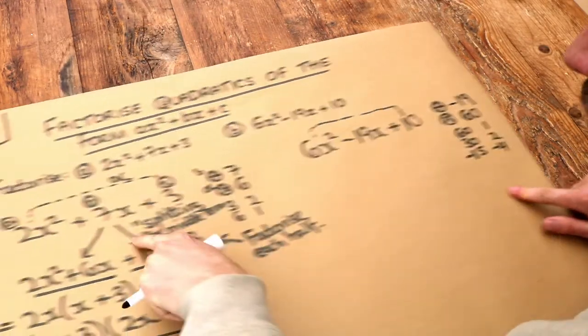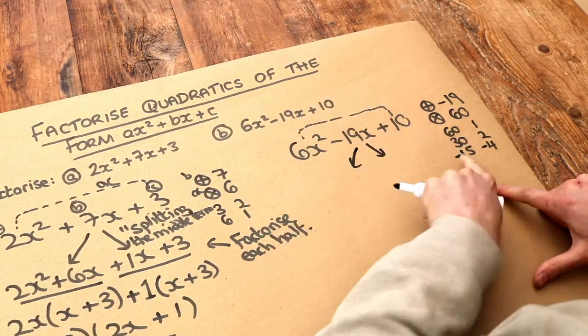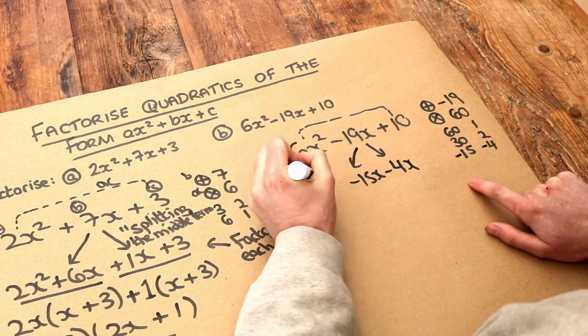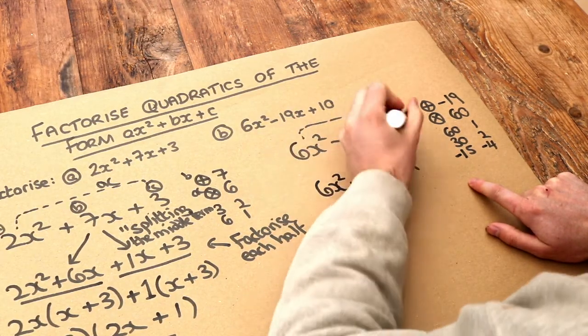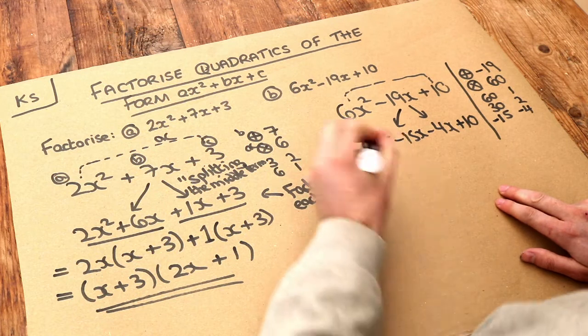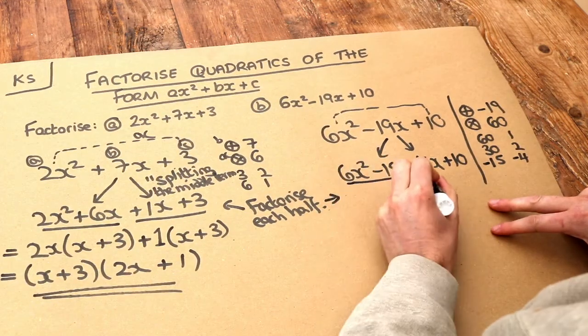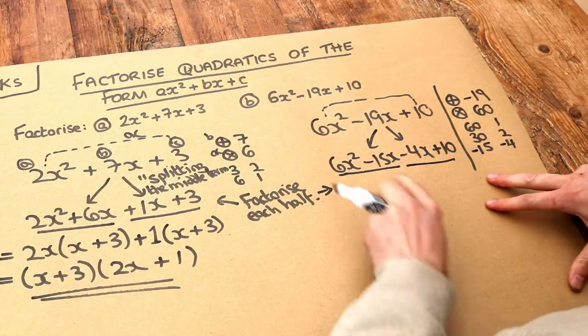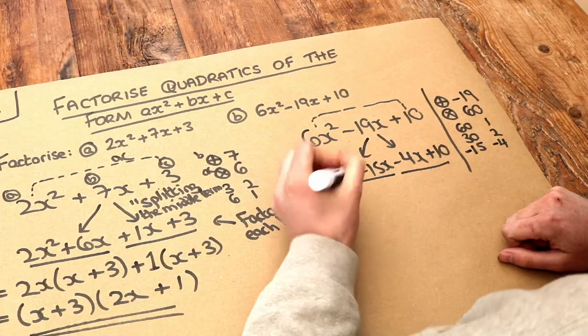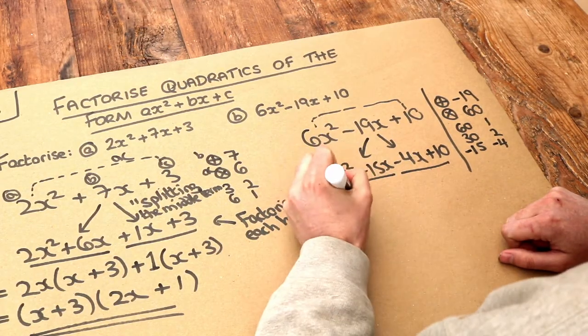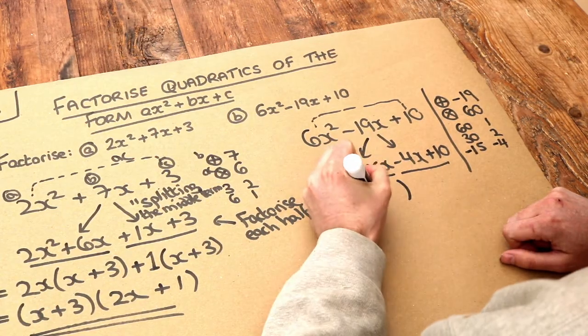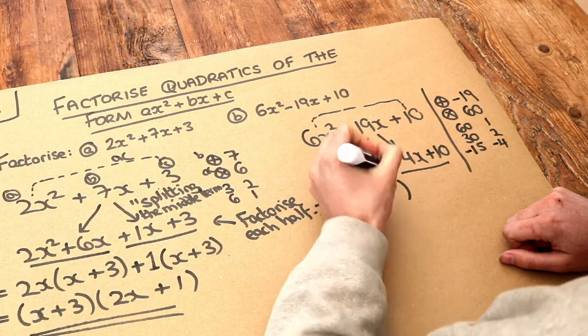So we split the middle term as before. We split this using the two numbers, so minus 15x, and minus the 4x, and fill in the remaining terms. So we've got 6x squared, we've got the plus 10, and then the next step, remember, is to factorise each half. So I underline each half, and then see, well what's common here? 6x squared minus 15x, well 6 and minus 15, they both have 3 in common. And both the x squared and x have x in common. Let's open a bracket. 3x times what is 6x squared? Well it's 2x. And 3x times what is minus 15x? Well it's minus 5.